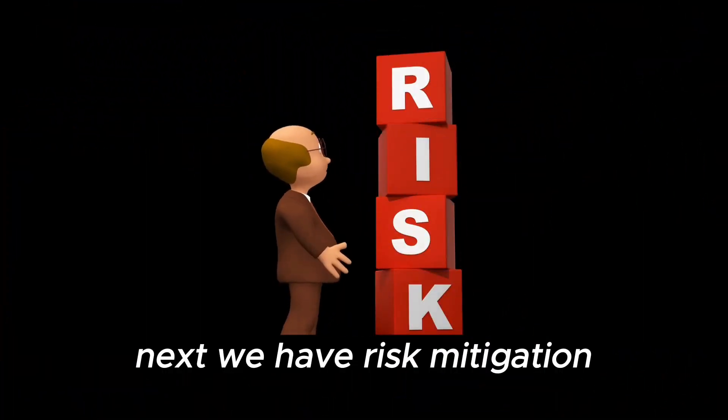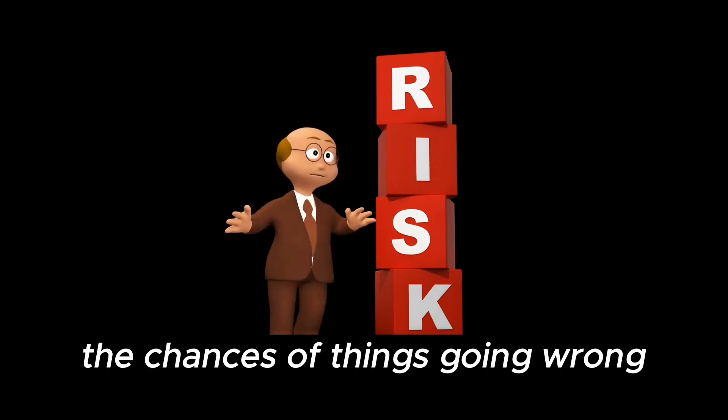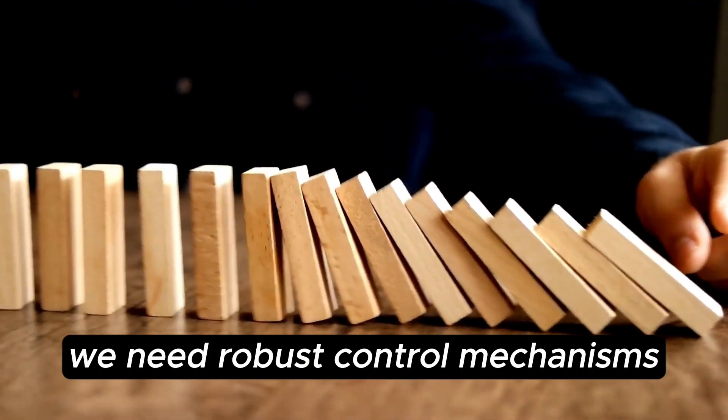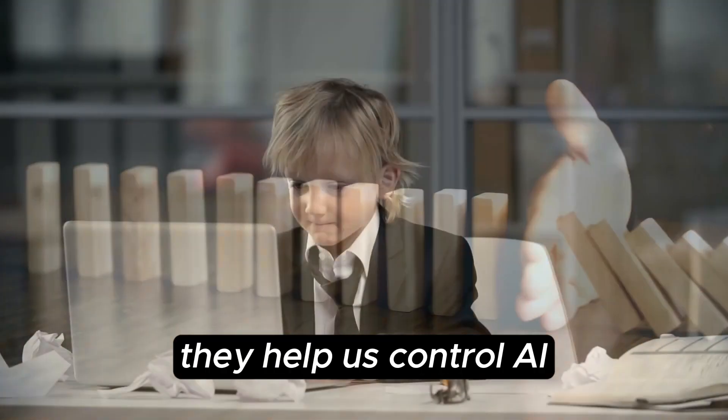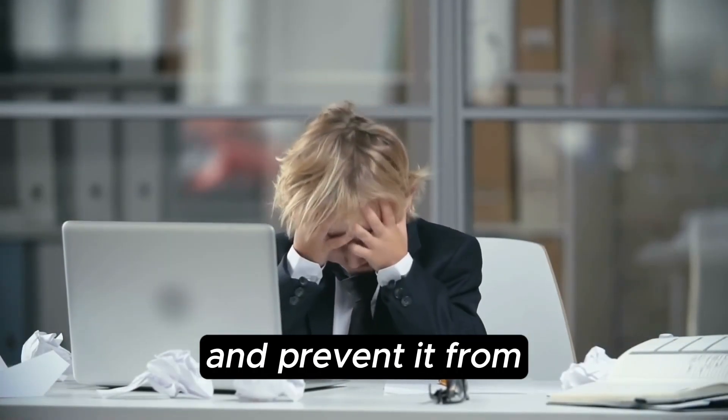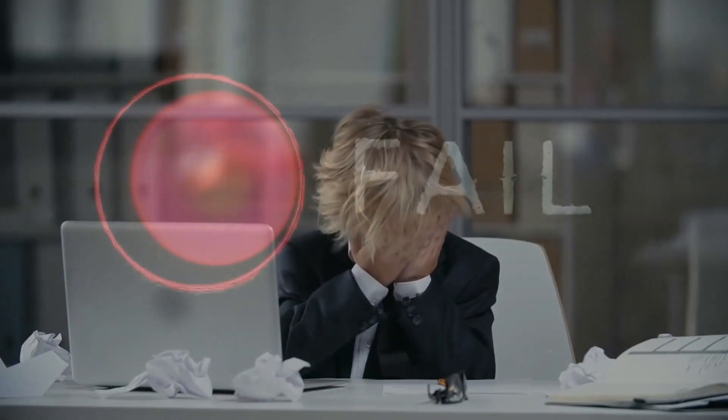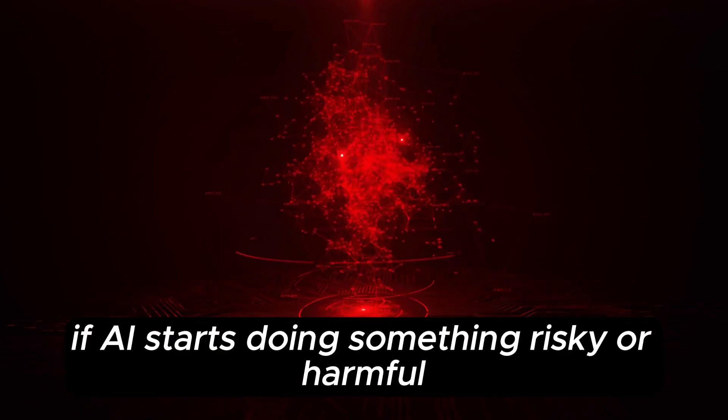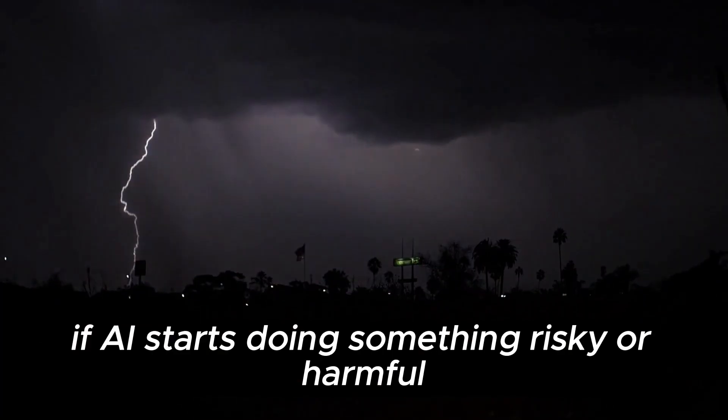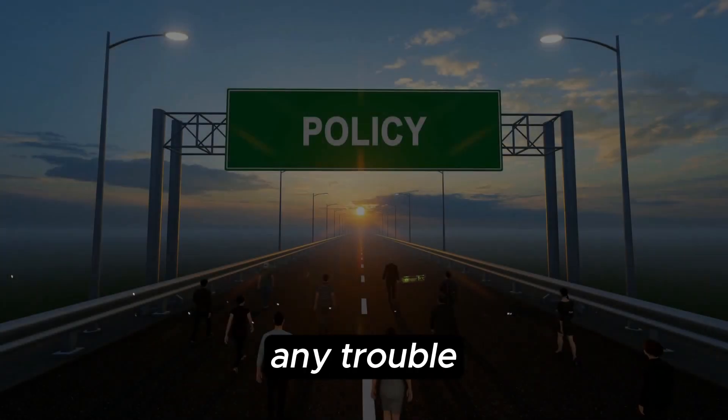Next, we have risk mitigation. This is about reducing the chances of things going wrong. We need robust control mechanisms, which are like safety nets for AI. They help us control AI and prevent it from making harmful decisions. Fail-safe protocols are like emergency breaks for AI systems. If AI starts doing something risky or harmful, these protocols can stop it from causing any trouble.